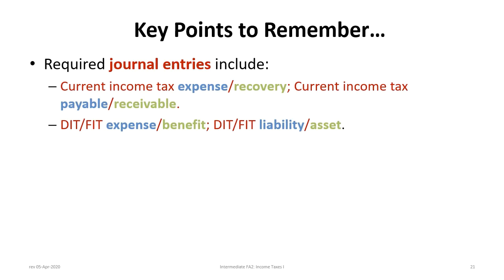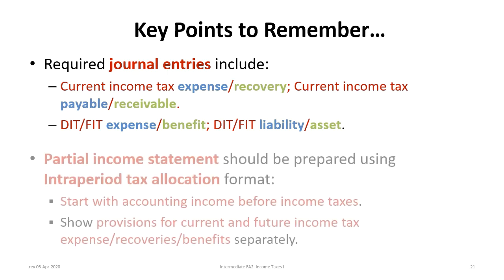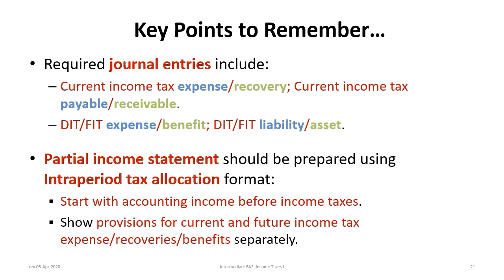Journal entries include a debit or credit to current income tax expense or recovery, and an opposing entry to current income tax payable or receivable. If we have current income tax expense, debit the expense and credit the payable; if recovery, credit the recovery and debit the receivable. For deferred income tax, debit the expense and credit the liability, or credit the benefit and debit the asset. The partial income statement should use intraperiod tax allocation format, starting with accounting income before taxes and showing provisions for current and deferred or future tax separately.